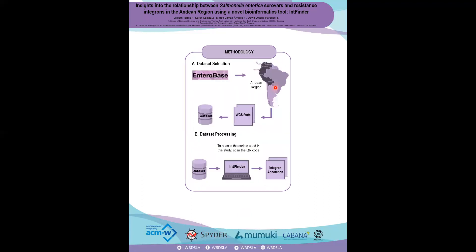This is the methodology. It was divided into two parts. The first one corresponds to the dataset selection, which contains whole genome sequences from the NCBI database. The sequences came from the five countries of the Andean region, which are Venezuela, Colombia, Ecuador, Peru, and Bolivia.